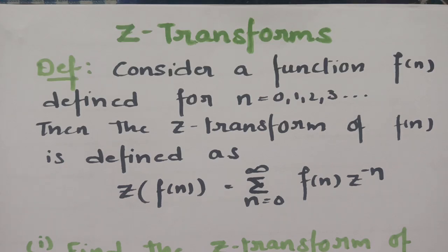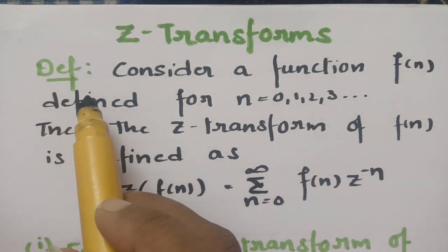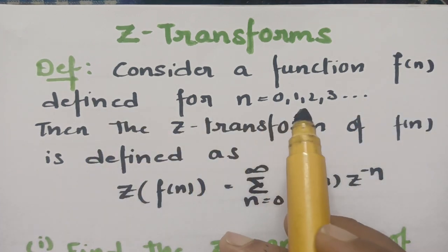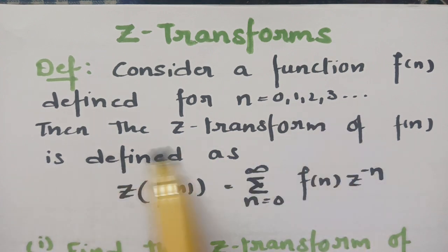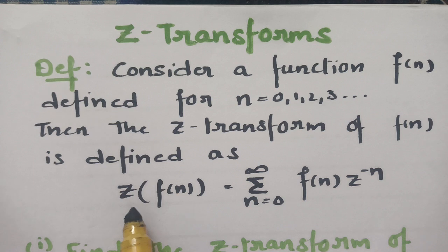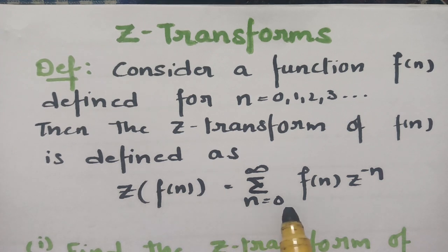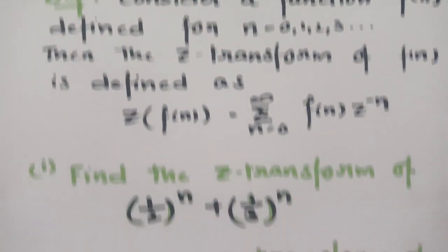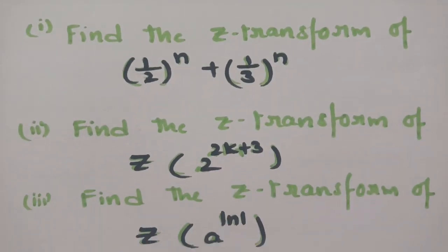Today's video is on Z transforms. I am going to explain what is the definition of Z transforms, and using this definition I am going to solve a few problems which are most important. According to the definition of Z transforms, we consider a function f of n defined for n equal to 0, 1, 2, 3, and so on. The Z transform of f of n is defined as: Z{f(n)} = σ (n=0 to ∞) f(n) · z^(−n).